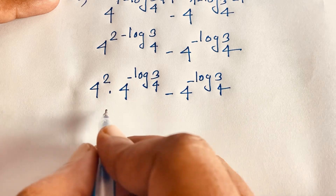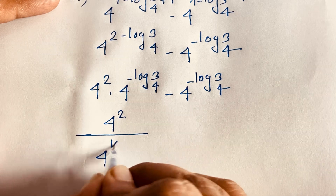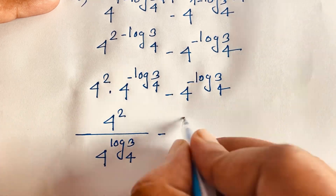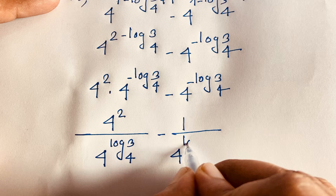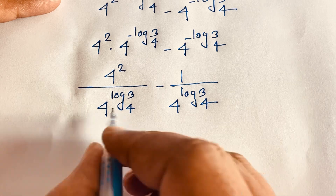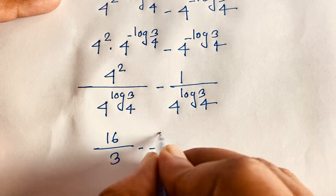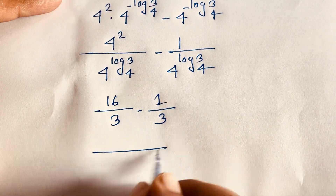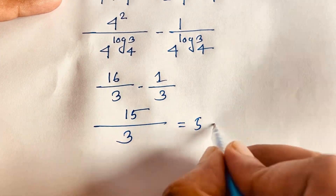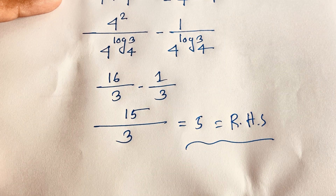We get 16 times 4 to the power (minus log 3 base 4), minus 4 to the power (minus log 3 base 4). Now 4 to the power minus log 3 base 4 equals 1 over 3. So this becomes 16 times (1/3) minus (1/3). The least common denominator is 3. So 16 minus 1 equals 15, and 15 divided by 3 equals 5. The left-hand side equals the right-hand side, confirming our answer. Thank you all! If you enjoyed this video, please subscribe to my channel for other interesting videos. Goodbye, take care.